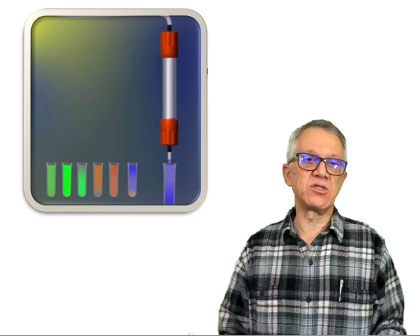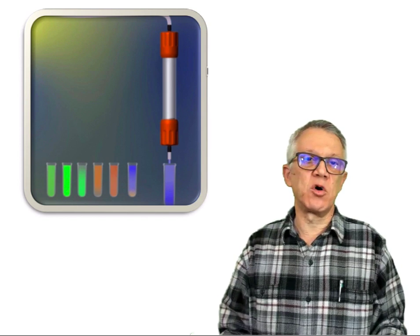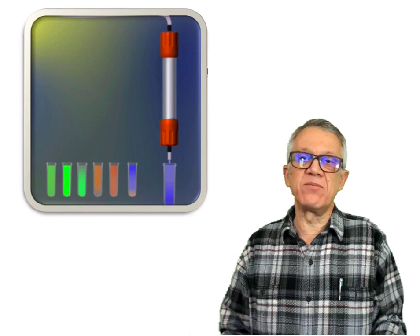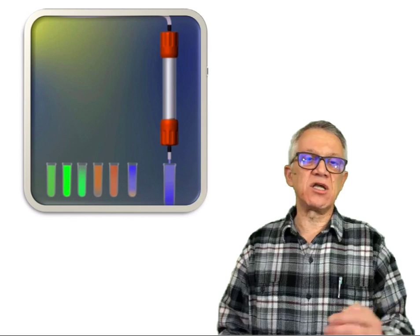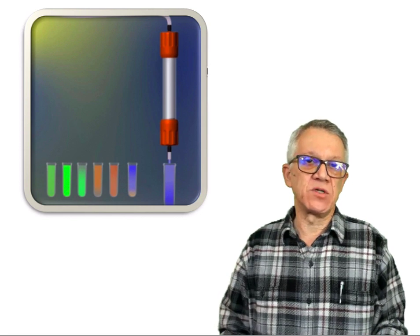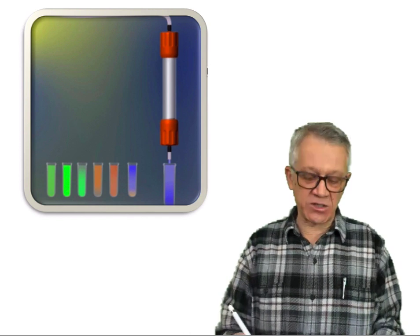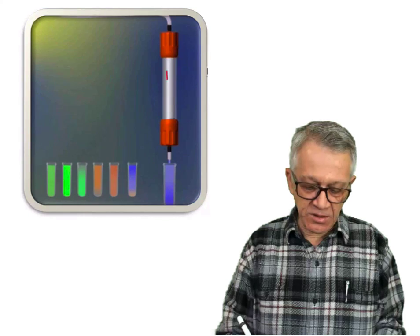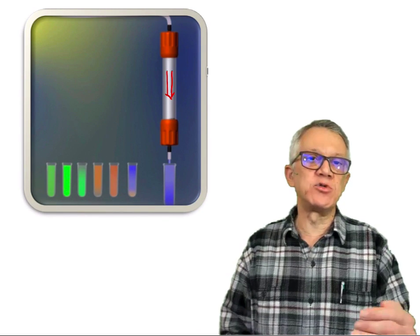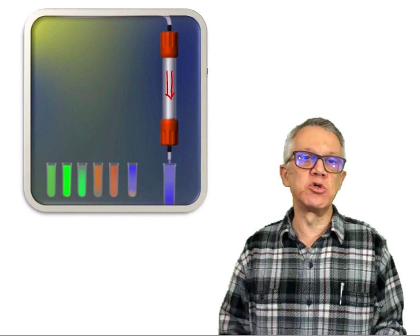In the case of ion-exchange chromatography, we are dealing with peptides and proteins, so our mobile phase is a buffer, and the pH of the buffer is very important because it dictates the overall charge of the proteins. The proteins are loaded on the column and the mobile phase passes through. Material that is not binding to the column passes through directly without any retention — those are the pass-through material.